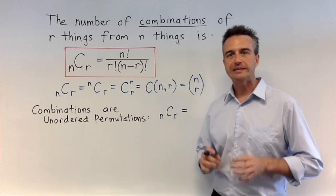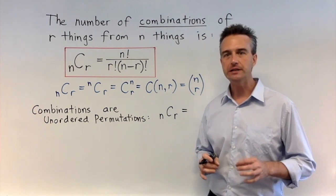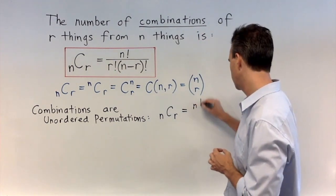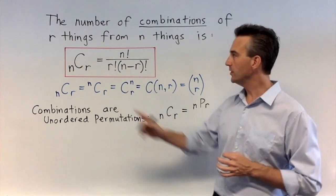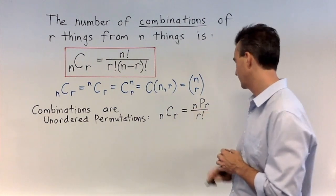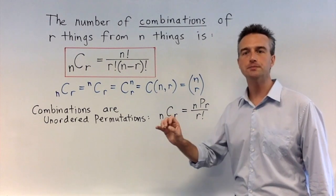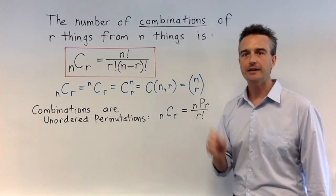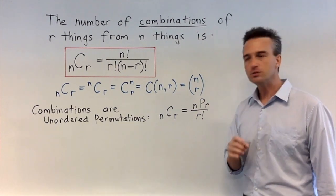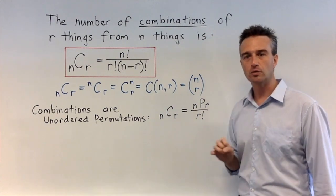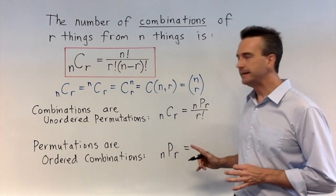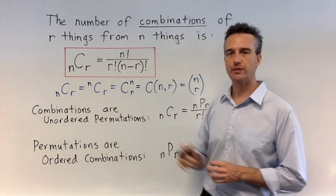Did you notice a connection between the nPr formula and the nCr formula? One way to describe the connection is nCr is actually equal to nPr with the extra division of factorial r on the bottom. Permutations are arrangements where order is important. For combinations, the order is unimportant. So there are far fewer combinations as compared to permutations. So what we do, we divide by factorial r to get that smaller number and that tells us the number of combinations.